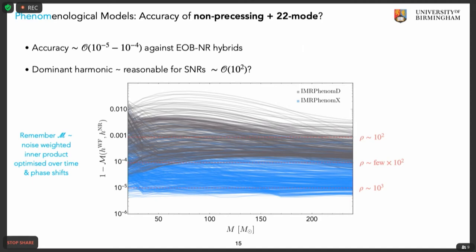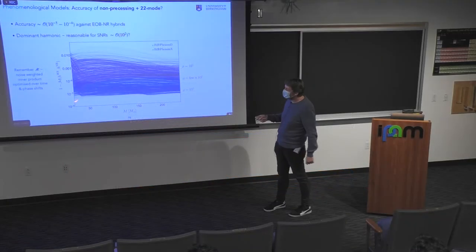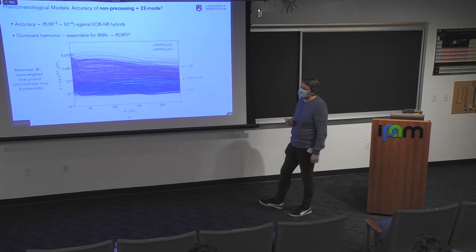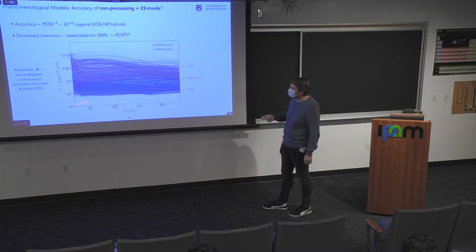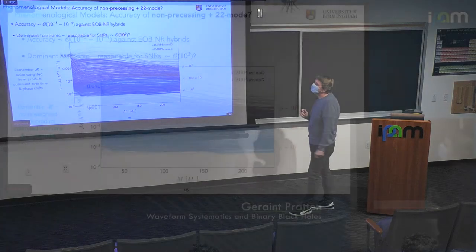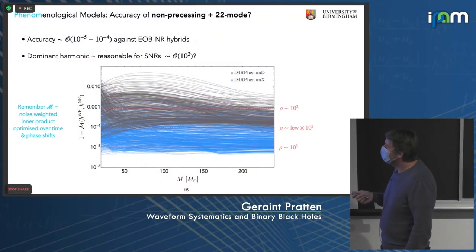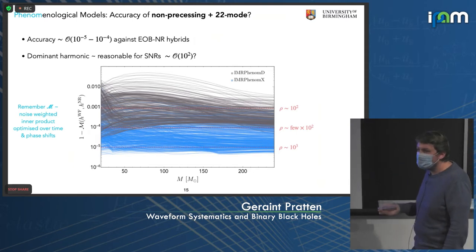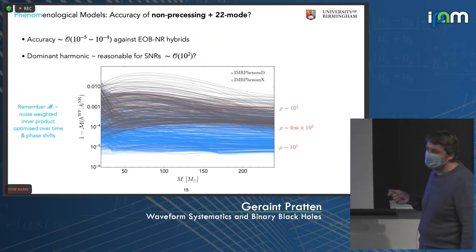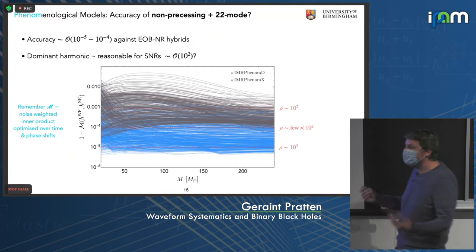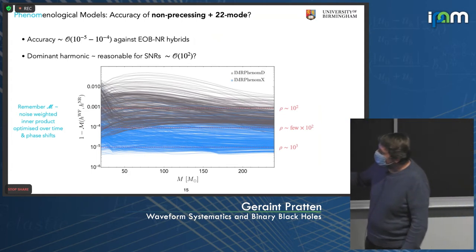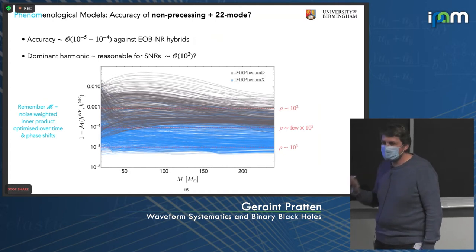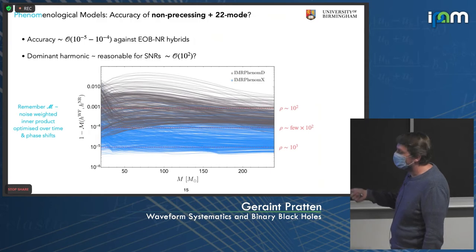For the non-precessing 2-2 mode (PhenomXAS), the accuracy of the mismatches is really around 10^-5 to 10^-4 against EOB-NR hybrids. At low masses you probe low frequencies, essentially probing agreement with EOB. At high masses you shift towards probing the NR sensitivity of your hybrid. Mismatches are clustered around a few times 10^-5, but the tail extends around 10^-3. For the dominant harmonic, we expect things to be reasonable for pretty large SNRs, maybe on the order of a few hundred. The larger mismatches at the tail come from things like higher mass ratios where analytical information breaks down faster.